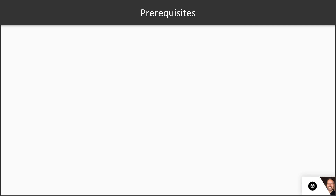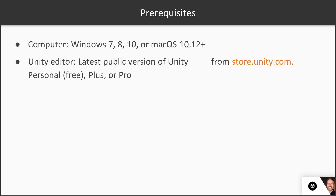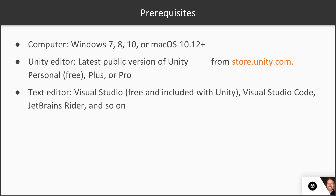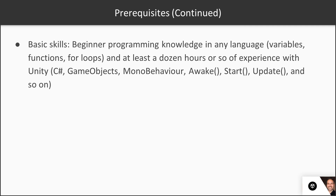Prerequisites for this course: you'll need a computer running Windows or Mac, a Unity editor, and a code text editor. The free personal edition of Unity comes with both. Some basic skills would be required — beginning programming knowledge of any language, and even a dozen hours or so specifically with Unity would be very helpful. But we'll cover those basics.